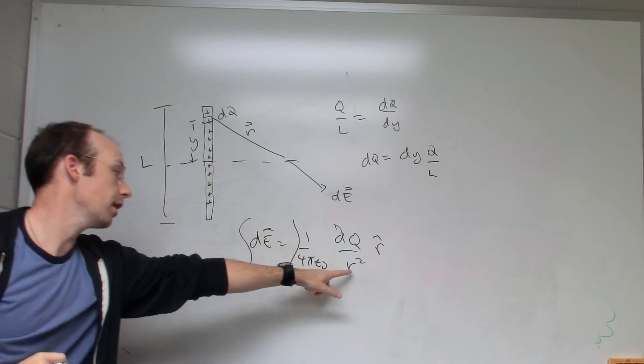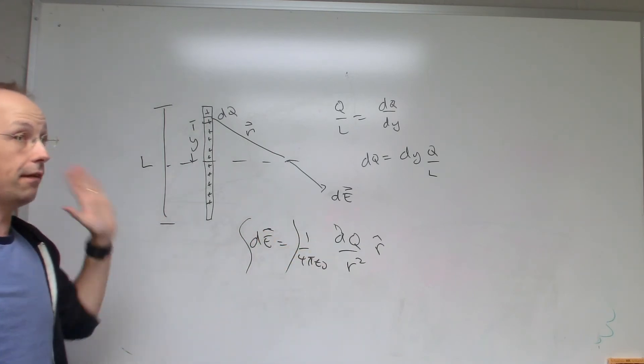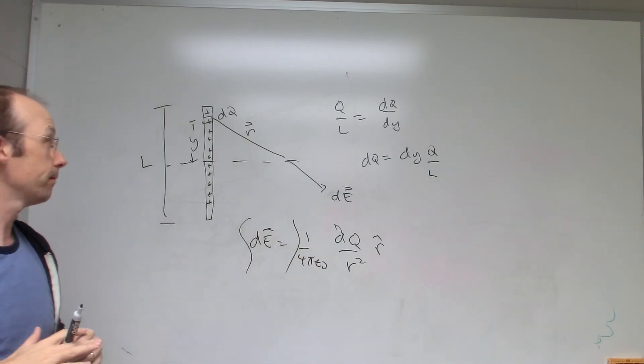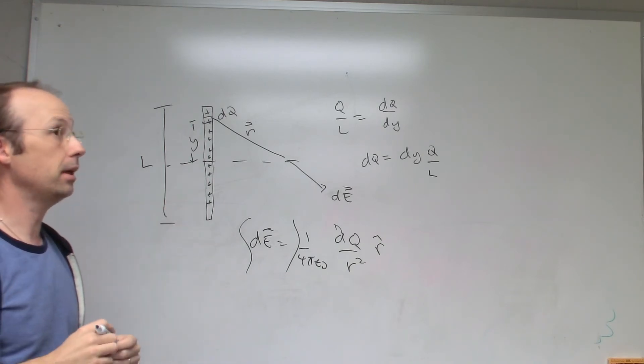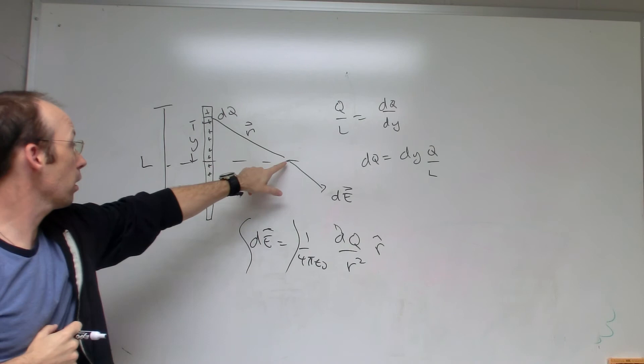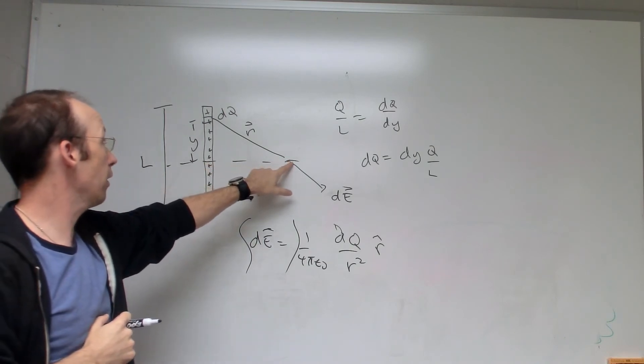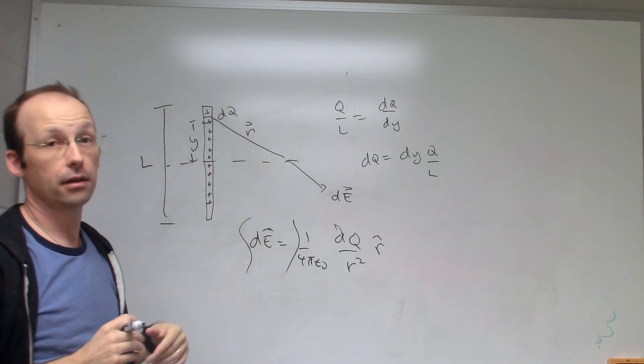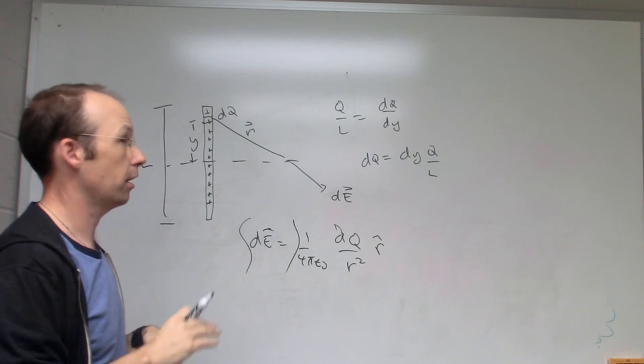You plug that in there, you get r in terms of y, and then you get everything in terms of y and you can integrate. And this integral turns out to be not the easiest, but not impossible. We only did it for along the center of the rod, because other places it's just really too difficult to set up, just like the dipole.